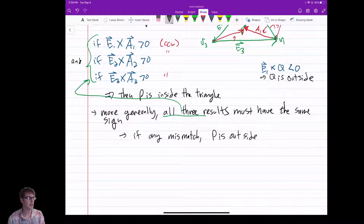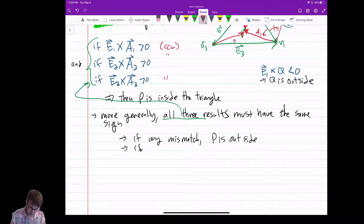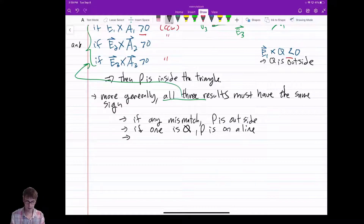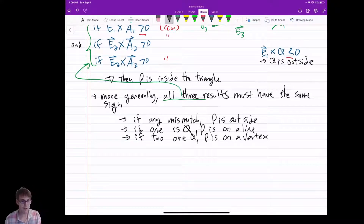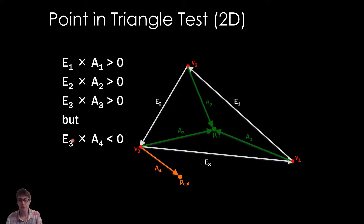There are two other special cases. If one cross product is zero, then P is on a line — on an edge. If two cross products are zero, then P is on a vertex. So it's that simple: you do three cross product tests and you can quickly determine whether or not a point is inside a triangle.